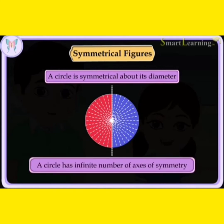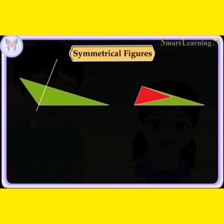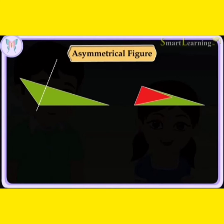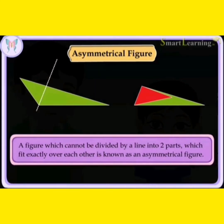Thus, a circle has an infinite number of axes of symmetry. If we fold this triangle along the given line, the two parts formed do not fit exactly over each other. This type of figure is known as an asymmetrical figure. Thus, a figure which cannot be divided by a line into two parts which fit exactly over each other is known as an asymmetrical figure.